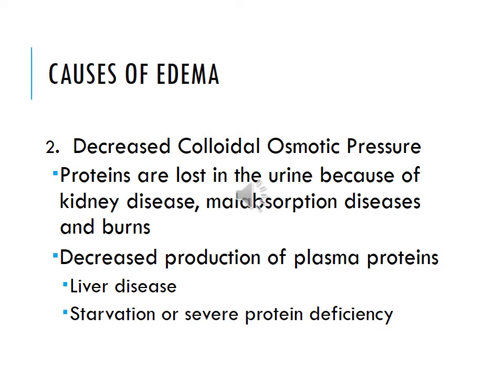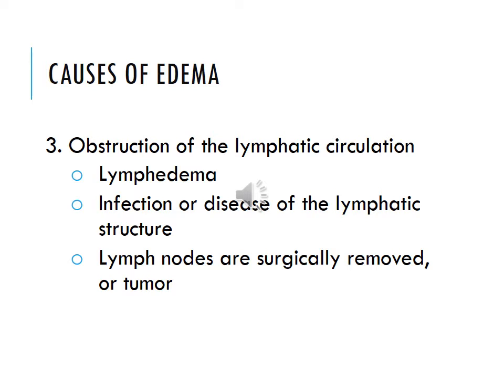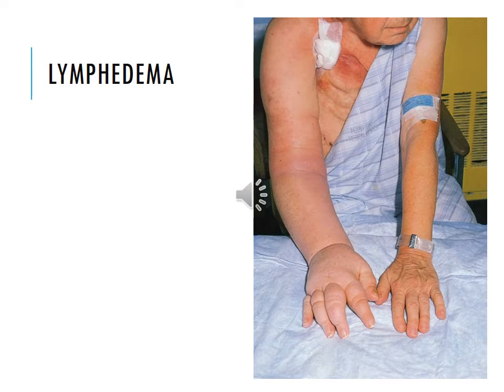You could also have decreased colloidal osmotic pressure. Proteins are lost in the urine because of kidney disease. It could be due to malabsorption diseases or burns. You could also have decreased production of plasma protein from liver disease, starvation, or severe protein deficiency. A third cause is obstruction of the lymphatic circulation, such as lymphedema, infection or disease of the lymphatic structure, lymph nodes that are surgically removed, or a tumor. This next picture shows lymphedema, and you can definitely tell a difference.